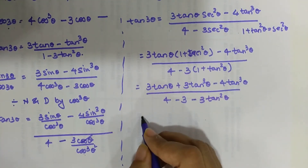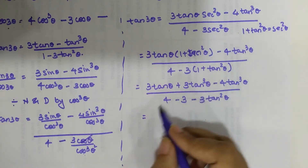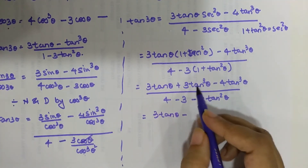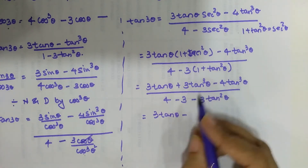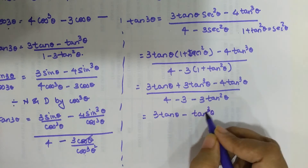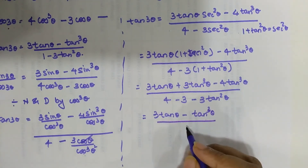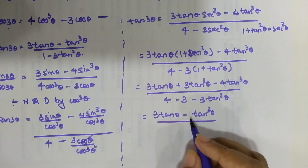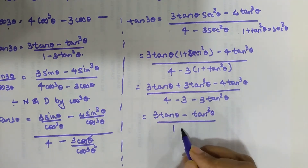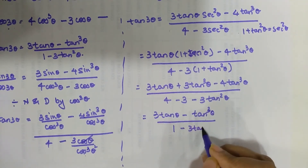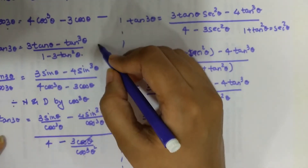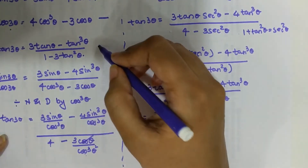Expanding: the numerator gives 3 tanθ + 3 tan³θ minus 4 tan³θ, which simplifies to 3 tanθ minus tan³θ. The denominator gives 4 minus 3 minus 3 tan²θ, which is 1 minus 3 tan²θ. So tan 3θ equals 3 tanθ minus tan³θ upon 1 minus 3 tan²θ — which is exactly your formula.